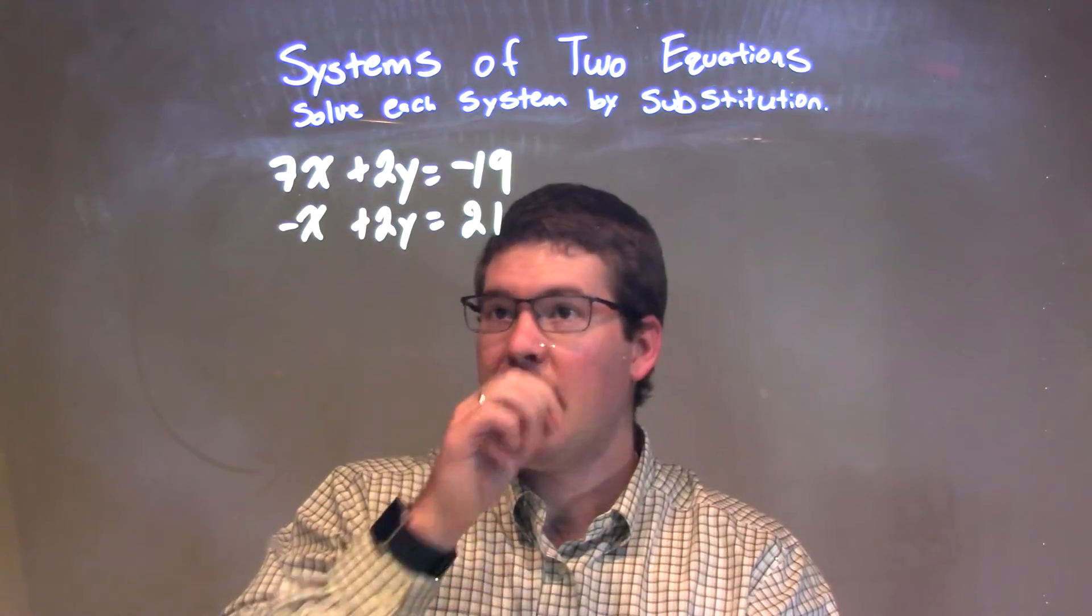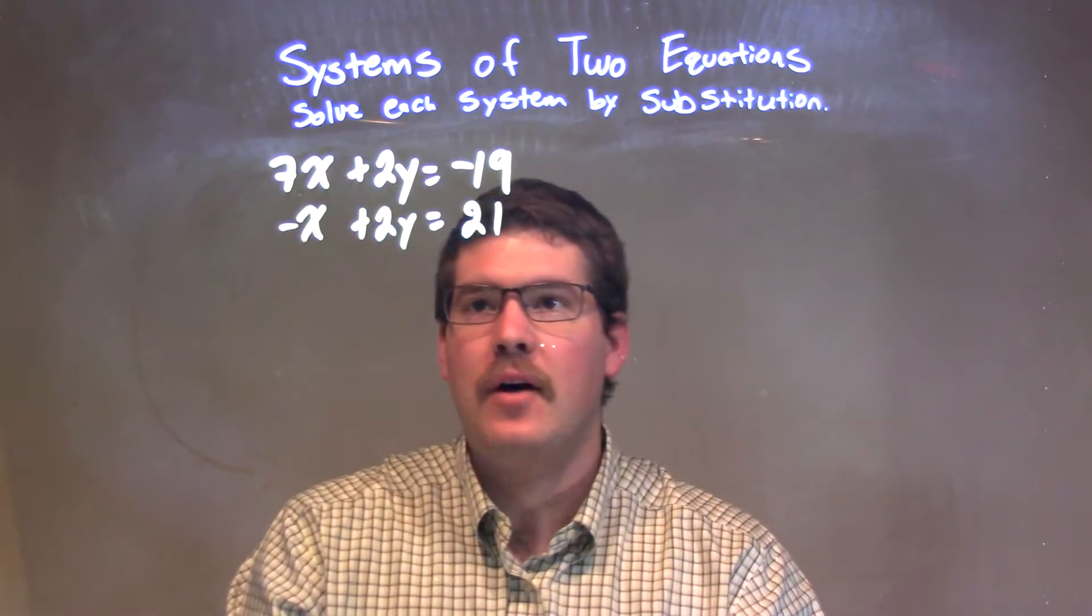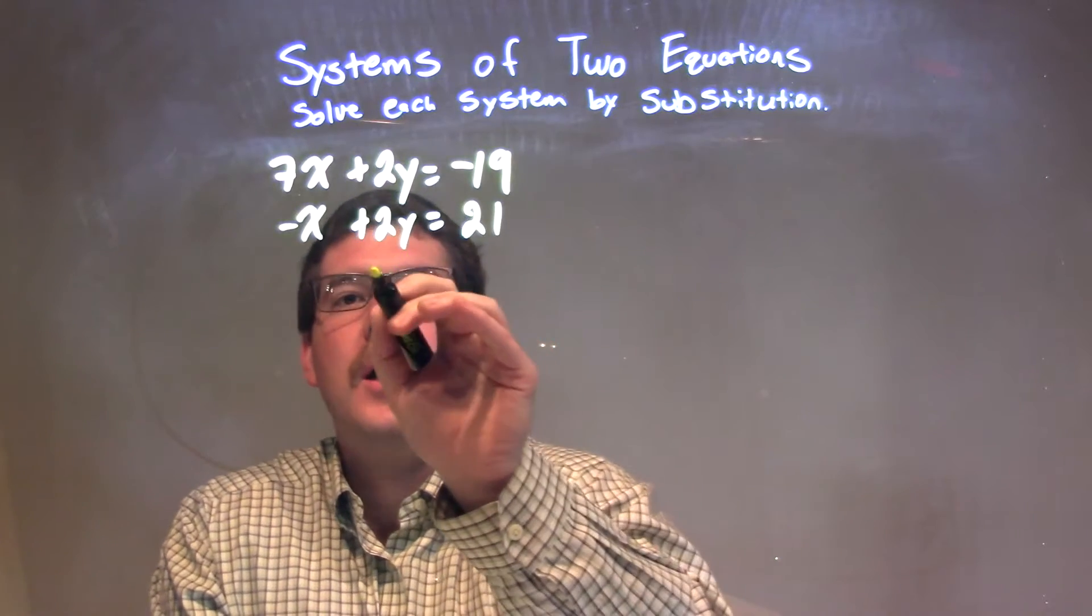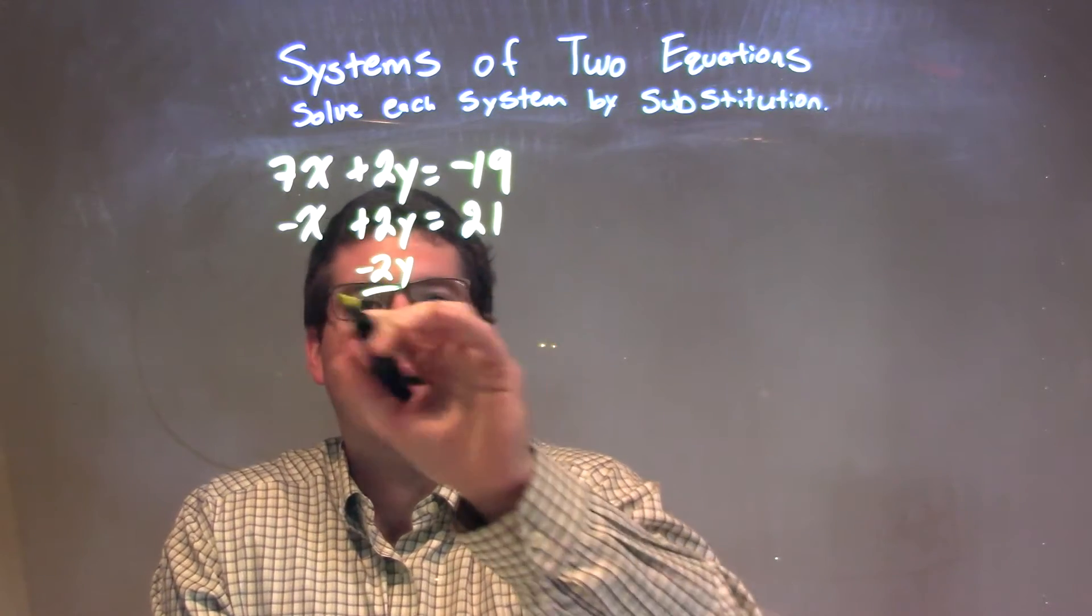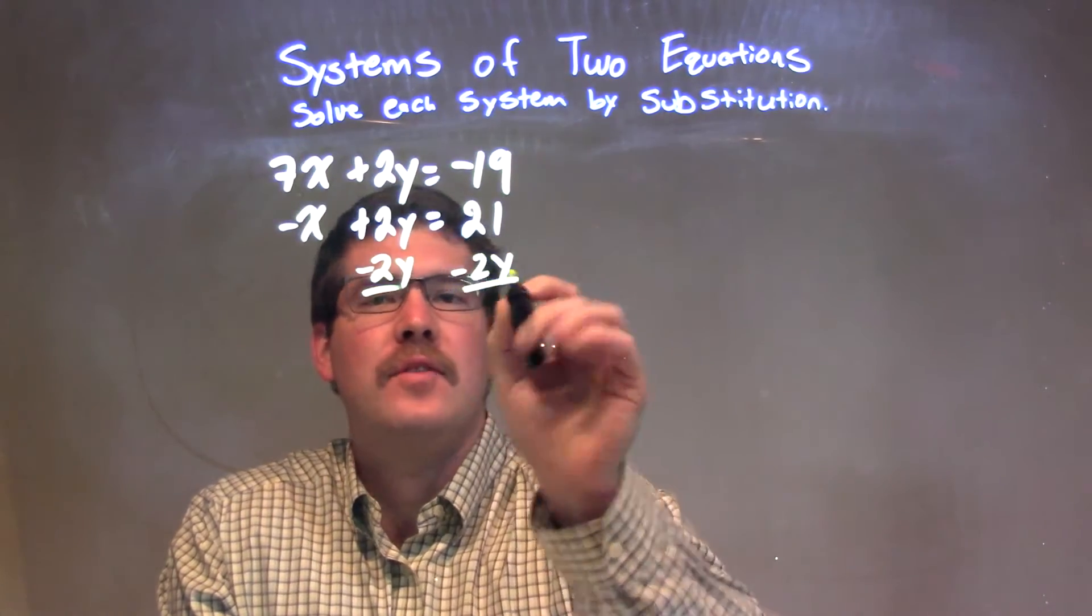From there, what I want to do is get a variable by itself, and I find that easier in the second equation. So I'm going to subtract the 2y, and I'm going to try to get x by itself. Subtract the 2y to both sides, pretty simple.